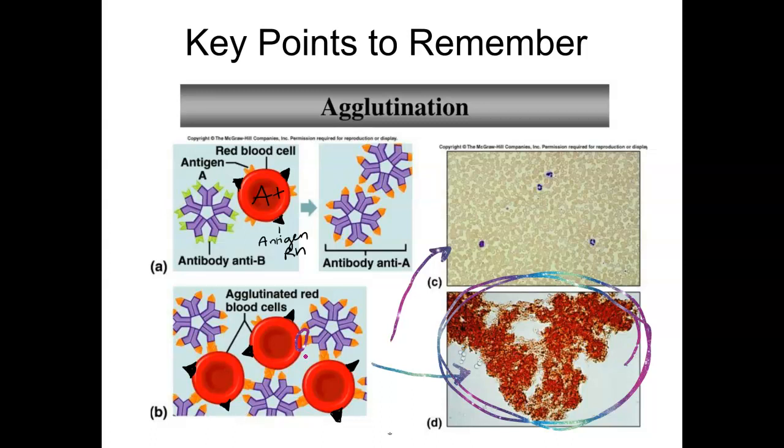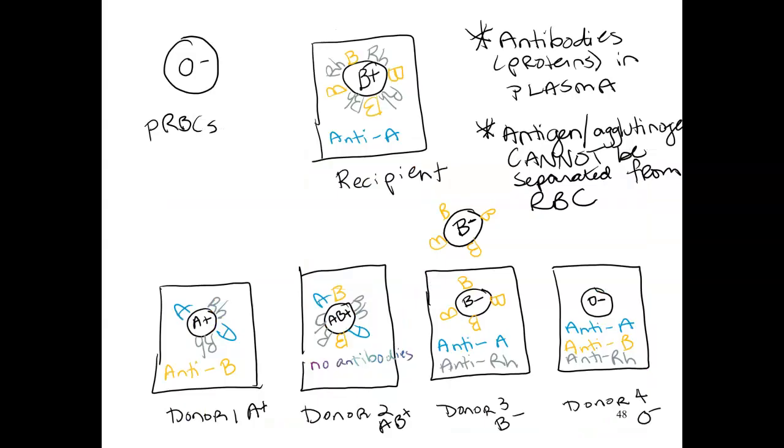So let's look at our donors and our recipient and see what we can do. So a couple reminders: antibodies are in the plasma, antigens or agglutinogens cannot be separated from the red blood cells. So what that means is I can't take this AB positive red blood cell and remove just the Rh or remove the A and the B agglutinogens. I can't do that; it just doesn't work that way.